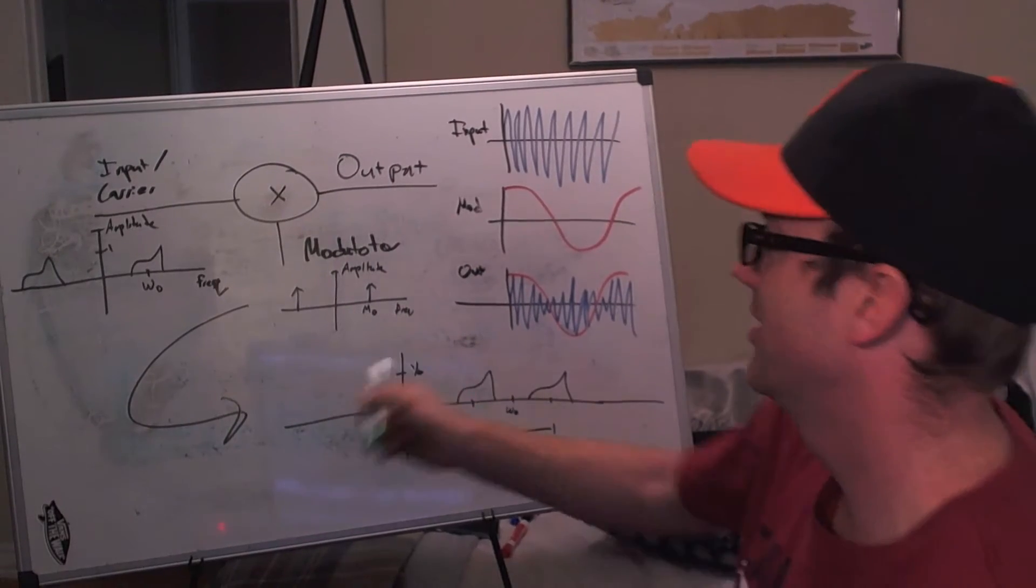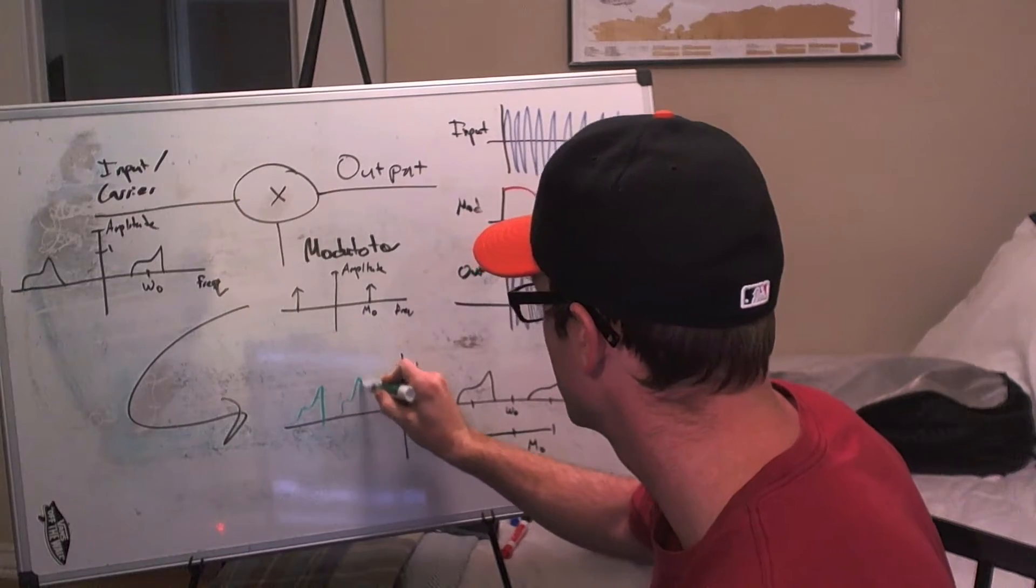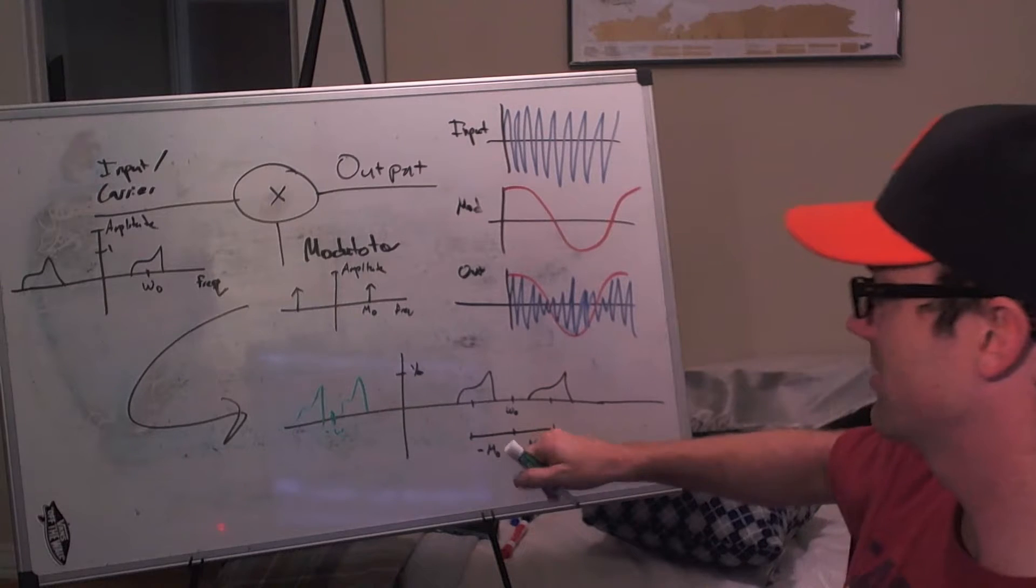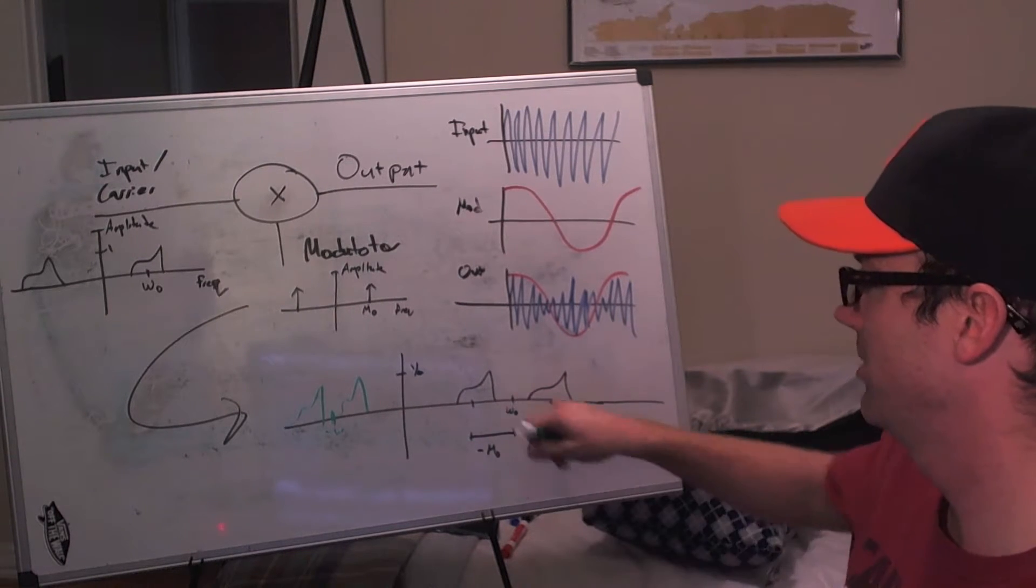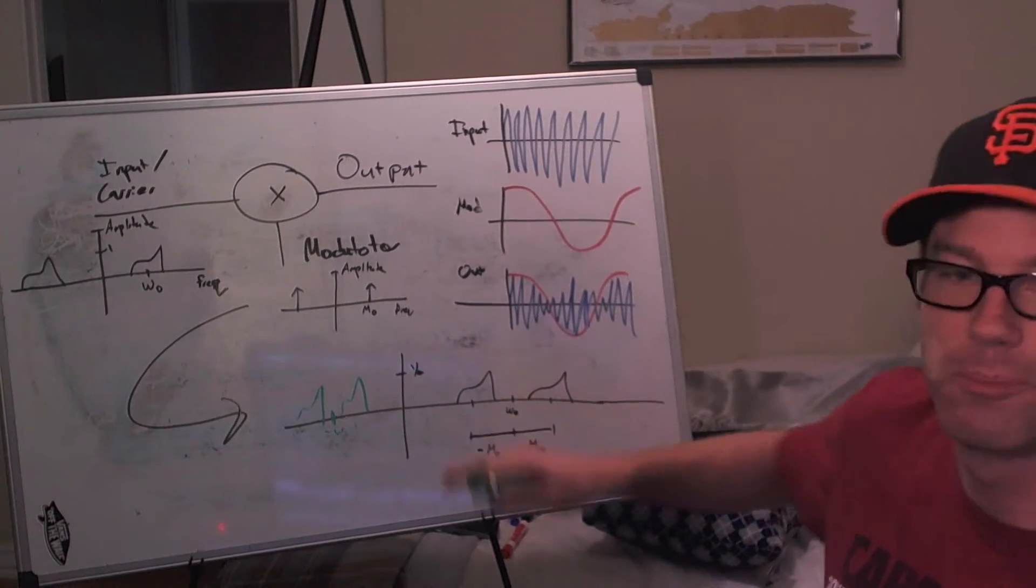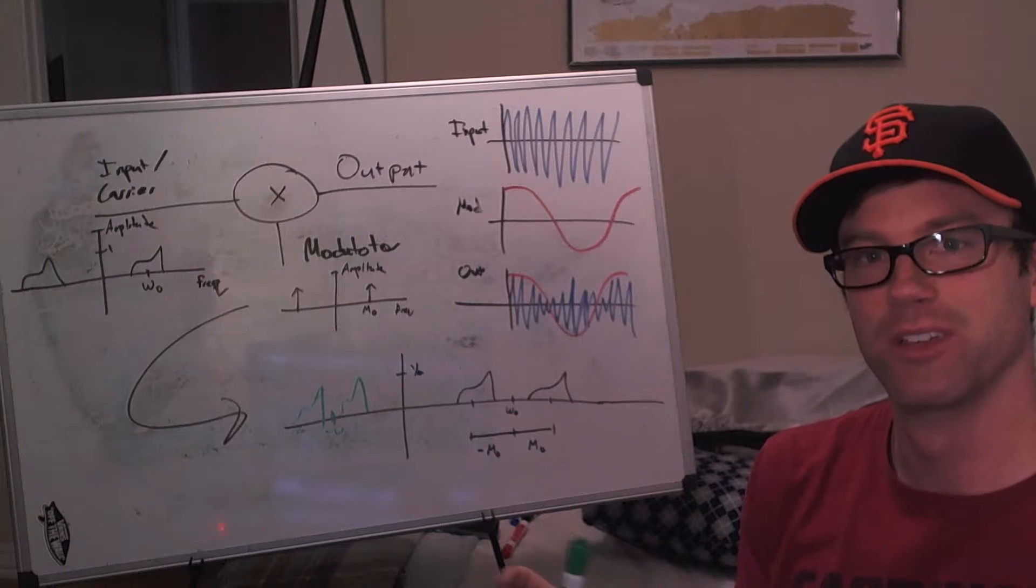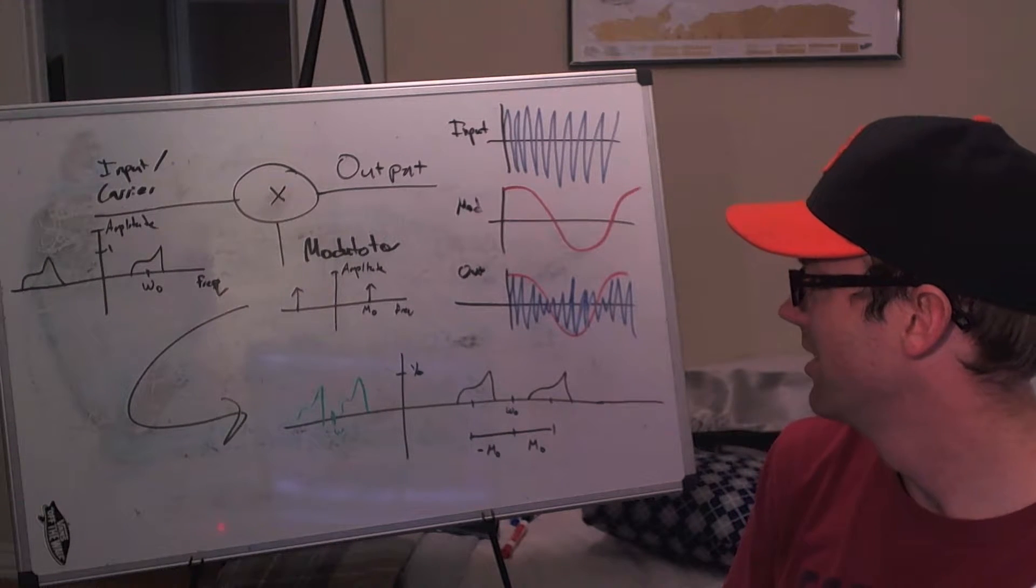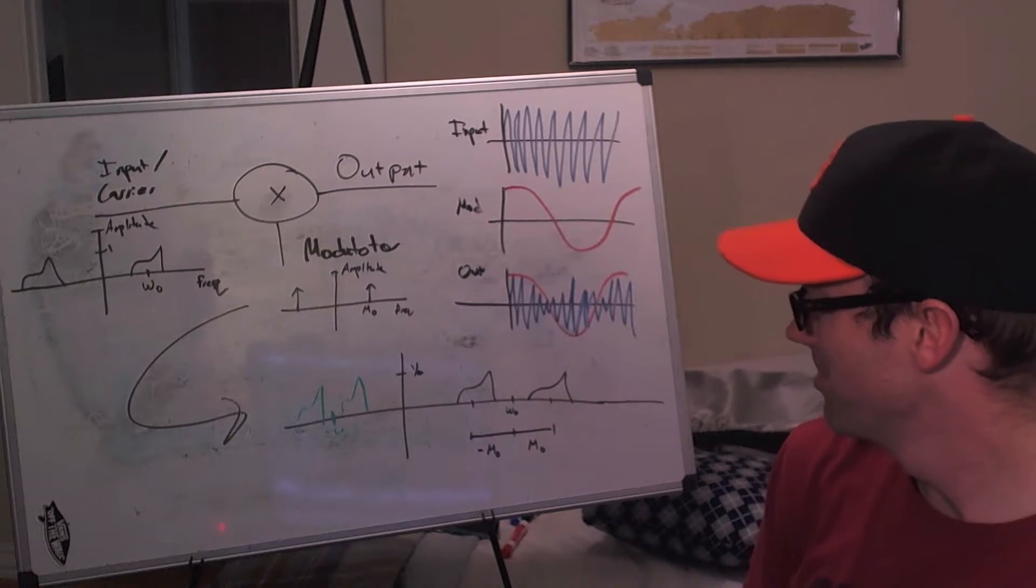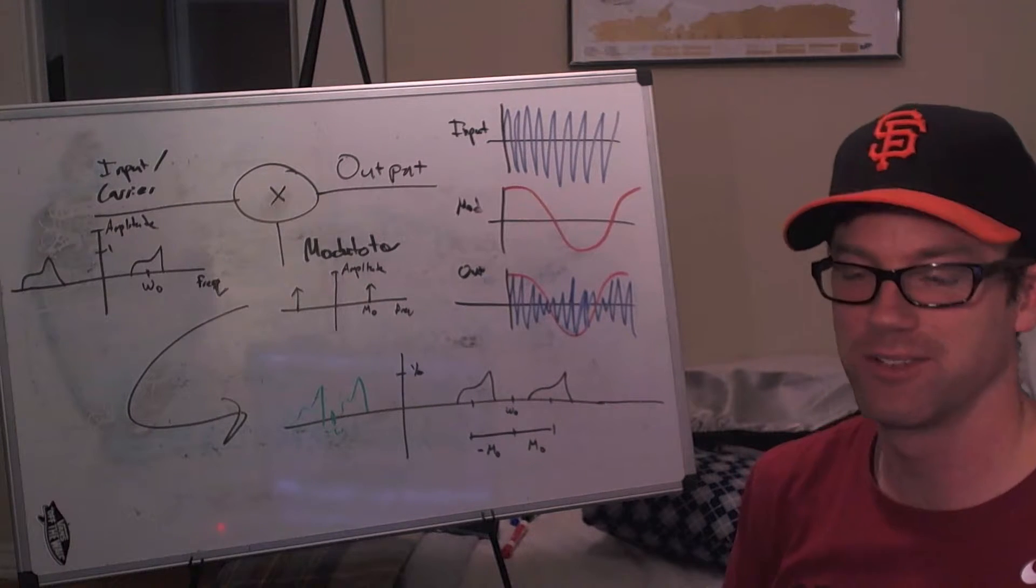You also get the negative equivalent. So there's also something down here that looks the same way, and this is centered around negative w0, and then like this picture, it's also plus or minus m0 from that point. What's really cool is like, basically by modulating the signal we can move it around in frequency. And not only that, but we get two copies of it at two different frequencies.